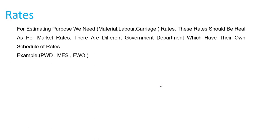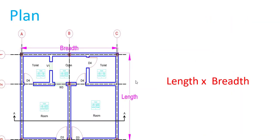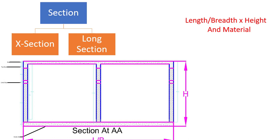The last requirement for estimation is rates: material rate, labor rate, and carriage rate. These rates should reflect real market rates. Different government departments have their own schedule of rates — for example, PWD rates, MES rates, and FWO rates. From schedule of rates books you can get excavation rates, PCC rates, and various other rates. Based on drawings, specifications, and rates, we can find out the total cost of any project.